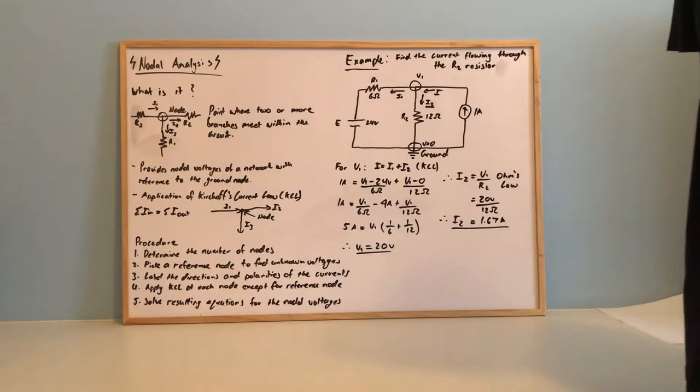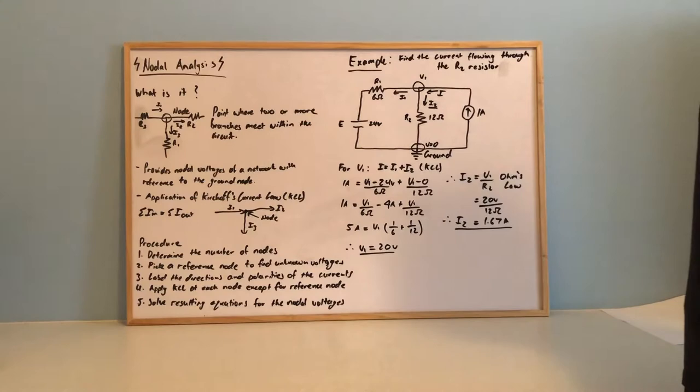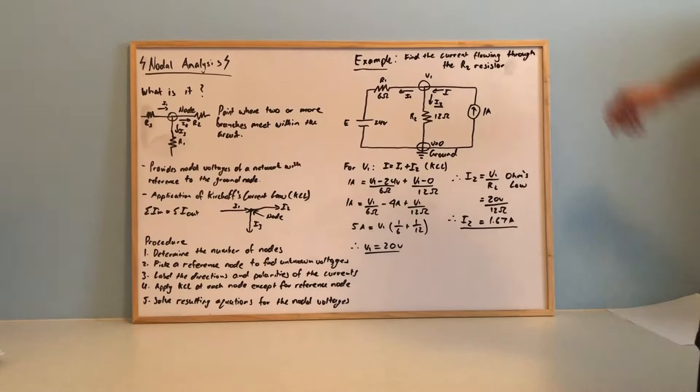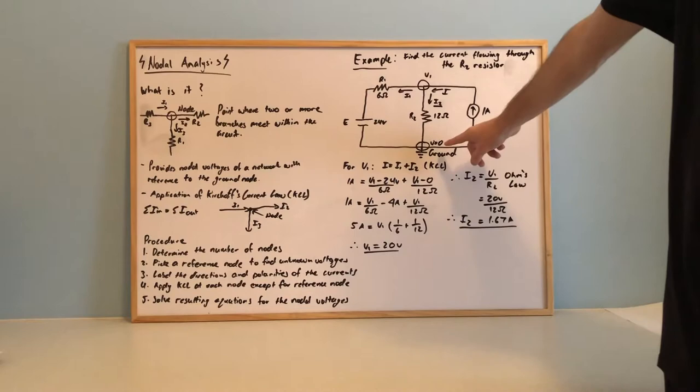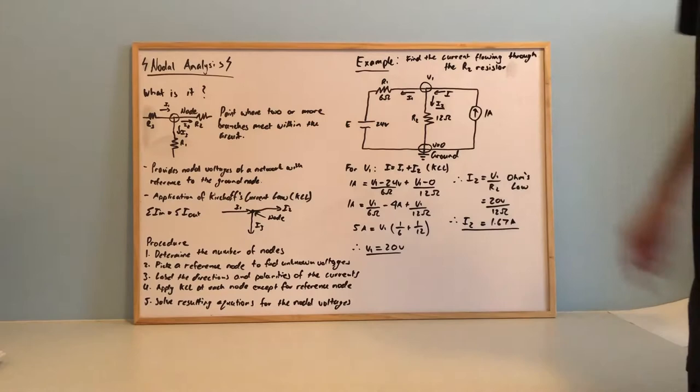However we can rewrite it like this which is known as KCL. We already know that our I value is one amp, so now we just need to find I1 and I2. We just use simple circuitry knowledge, so we have V1 minus 24 volts over the 6 ohm resistor. And for the I2 we have V1 over 0 between the unknown nodal voltage and ground over the 12 ohm resistor.